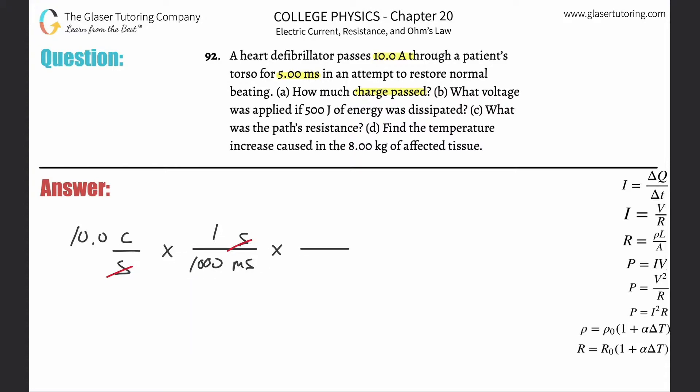Well, then I can simply cancel those seconds. Now I know the coulombs per millisecond. And then what I would do is just multiply by the number of milliseconds that it's being passed. 10 multiplied by 5 divided by 1,000, 0.5.